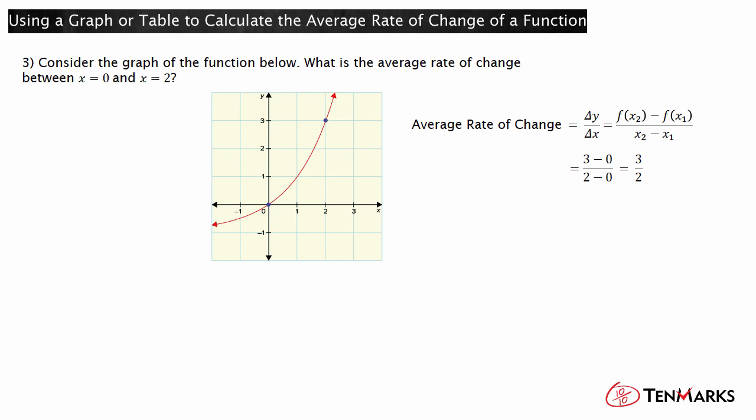There is also another way to calculate the average rate of change from a graph. Count the units between y equals 0 and y equals 3. There are 3 units. Similarly, there are 2 units between x equals 0 and x equals 2. Therefore, the average rate of change is 3 halves. Now you know how to calculate the average rate of change of a function between 2 points, from a graph or from a table. See you next time!